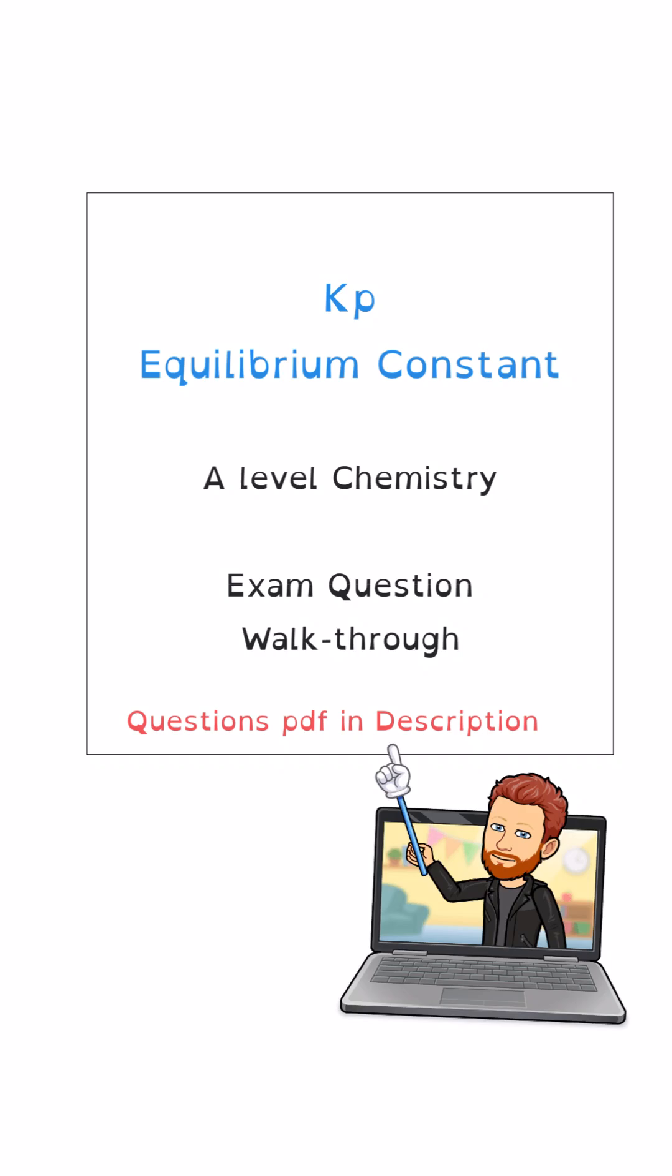Hello everybody, welcome back to the channel. I'm here again with another A-level chemistry exam question walkthrough. This time I'm looking at KP and the equilibrium constant to do with pressure. As ever, when I'm working through the question, I will write down my thoughts around the question in blue and the answers that are going to get you the marks in green. If you'd like to download the question and do it before I do the walkthrough, then the questions are available in the description as a PDF file.